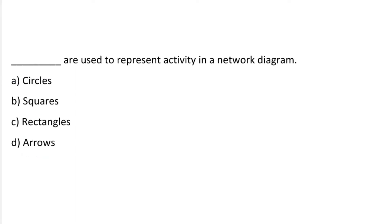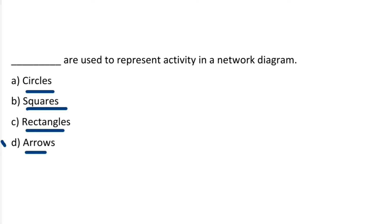Next question: what is used to represent the activity in the network diagram? Option A: Circle. Option B: Squares. Option C: Rectangle. Option D: Arrows. The correct answer is option D, Arrows.